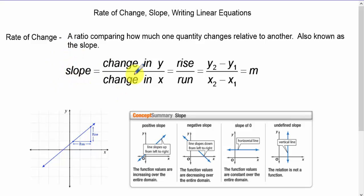Slope, we know, is the change in y over the change in x, also known as the rise over run, or the difference in y's over the difference in x's, which is m, the slope.